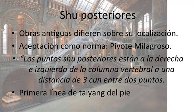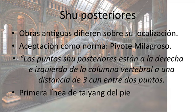Las obras antiguas difieren un poco en su localización, pero el Pivote Milagroso, que es el Ling Shu —segunda parte del Huang Di Nei Jing—, nos habla de que los puntos Shu posteriores están a la derecha e izquierda de la columna vertebral a una distancia de 1.5 cun lateral. Están al lado derecho y al lado izquierdo; entre un punto de la izquierda y un punto de la derecha, el mismo punto homónimo, la diferencia son 3 cun. Entre la apófisis espinosa de cada vértebra, hay 1.5 cun para la derecha y 1.5 cun para la izquierda, para localizar adecuadamente el punto.